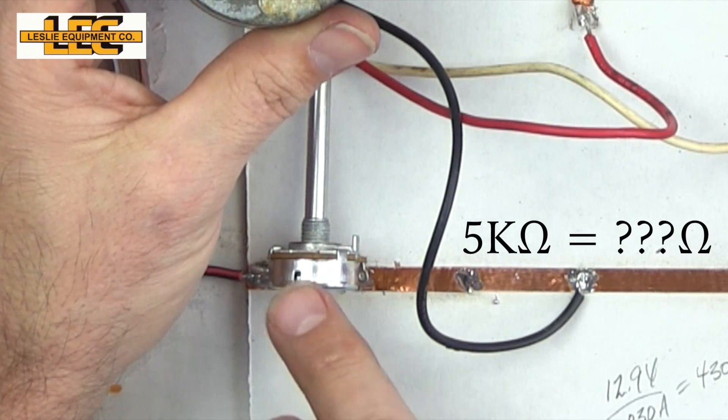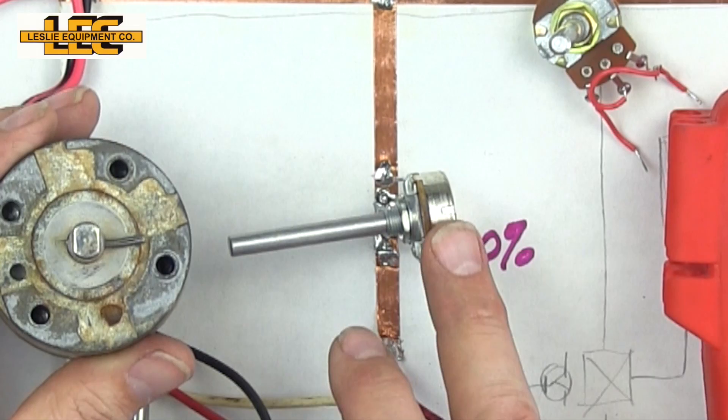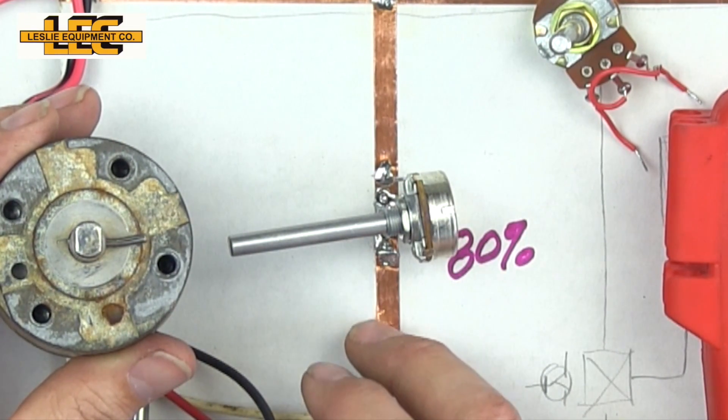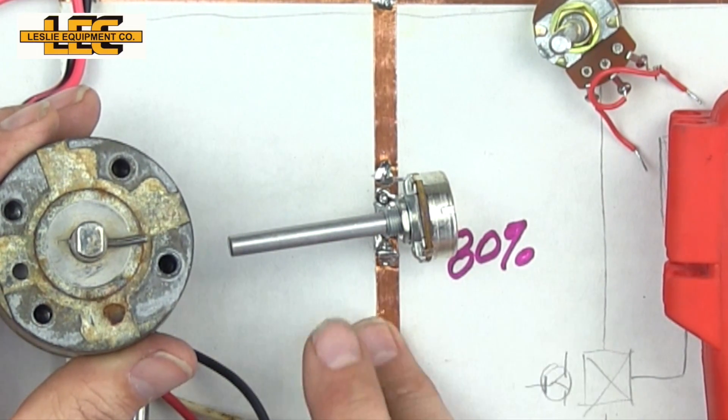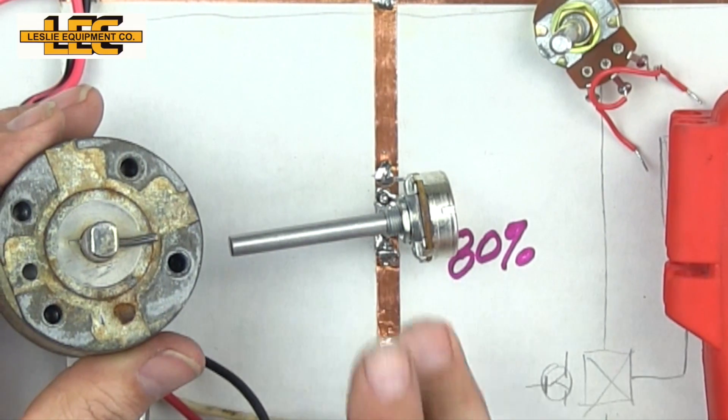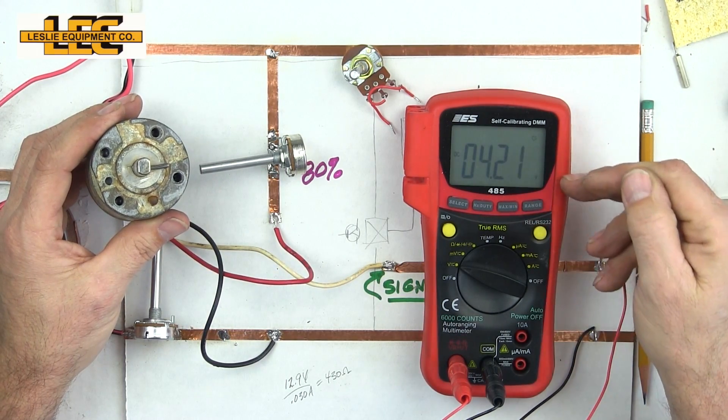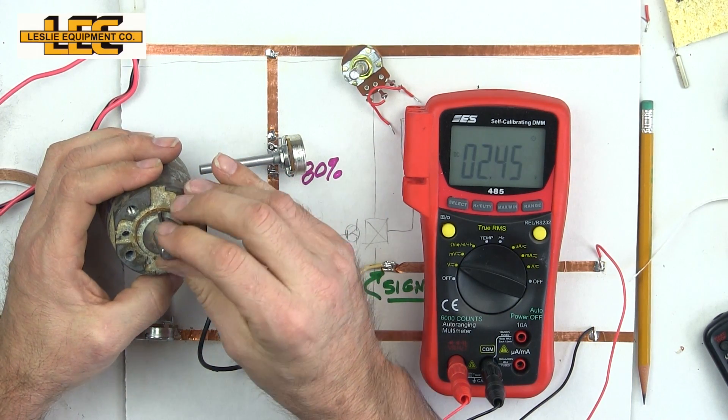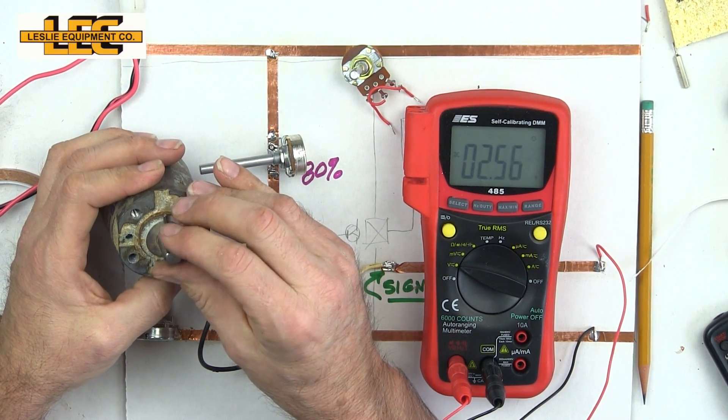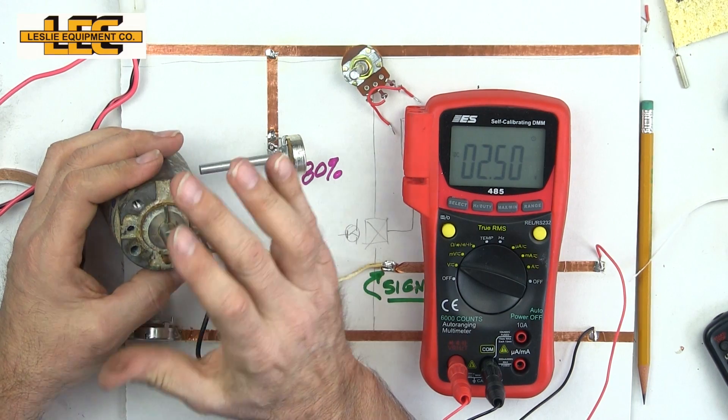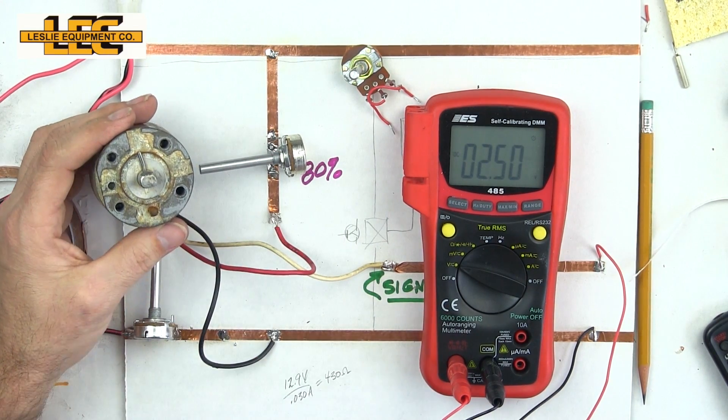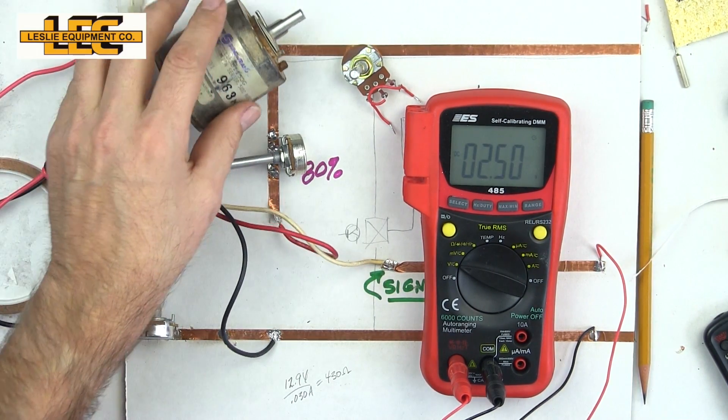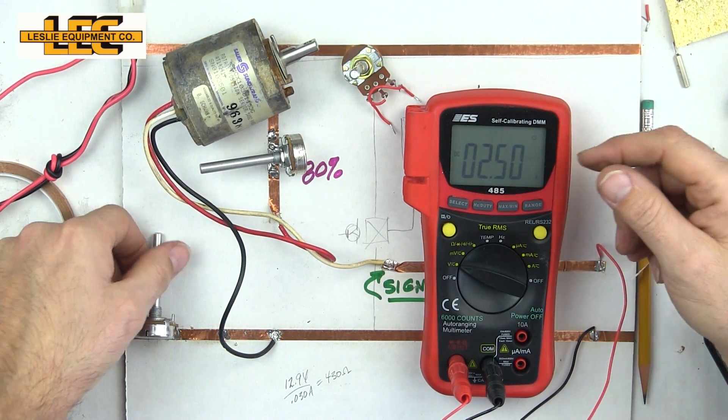Okay, I've got another 5k ohm potentiometer here as a rheostat. Right now there's no resistance in there at all. This is still providing me with a 5 volt reference. But watch what happens most importantly to the signal.